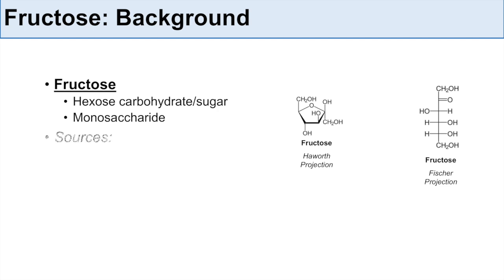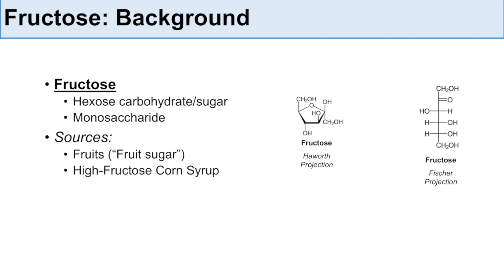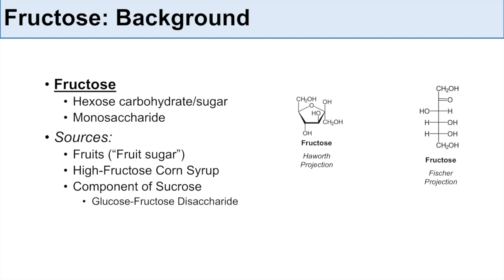What are some of the dietary sources of fructose? Well, one of the dietary sources comes from fruits — fructose is also known as the fruit sugar. But some of the more unhealthy dietary sources include high fructose corn syrup, and fructose as a component of sucrose, which is simply a glucose-fructose disaccharide.